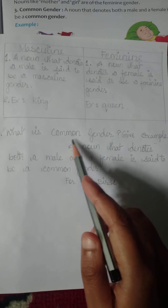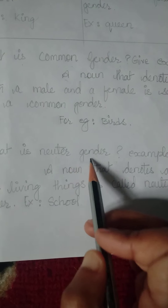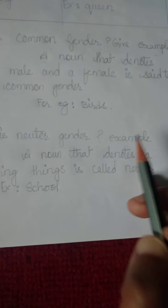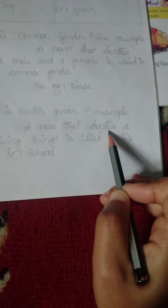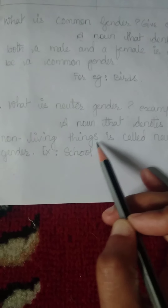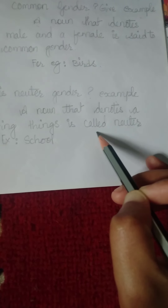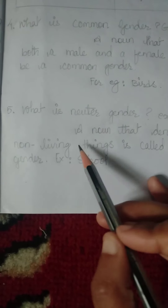Question number five, the last question, is: What is neuter gender? N-E-U-T-E-R, neuter, G-E-N-D-E-R, gender. Give an example also. A noun that denotes non-living things is called neuter gender. Example: school — school is a non-living thing because it is a building.